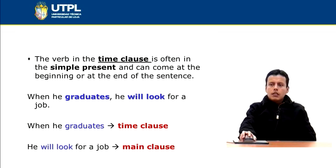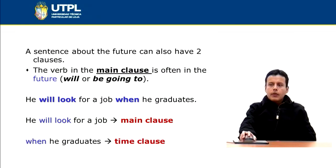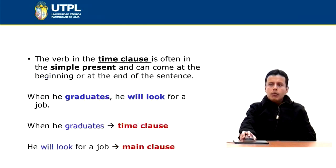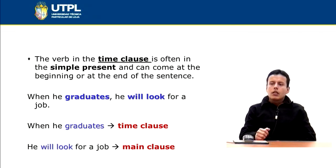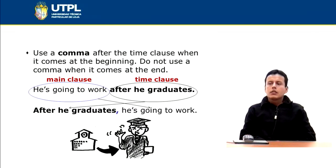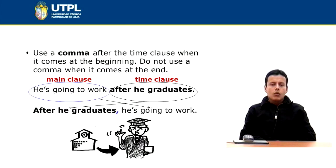What is the difference? When I start with the independent clause, I don't use a comma. But if I start the sentence with the time clause, I need to use a comma: 'When he graduates, he will look for a job.' You can see — when he graduates is the time clause, he will look for a job is the main clause. You have to use a comma after the time clause when it comes at the beginning, and don't use a comma when it comes at the end. It's the same sentence with the same meaning, but the difference is the comma and the order of the clauses.